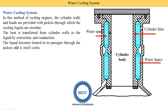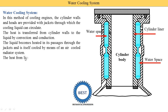The liquid becomes heated in its passage through the jacket, and is itself cooled by means of an air-cooled radiator system. This water is further supplied to another heat exchanger, or it is continuously circulated — meaning it is an open system, which we will explain later. How this water is circulated depends on whether it is an open system or a closed system. The heat from the liquid is in turn transferred to the air, meaning the water is again cooled by using air, in a radiator or in condensers, or it is also cooled by water depending upon the system.